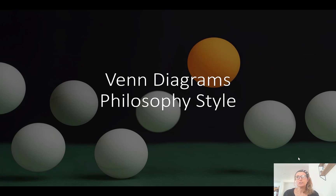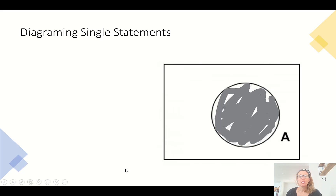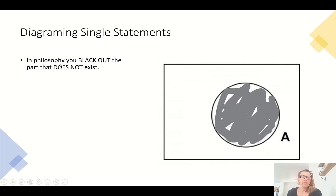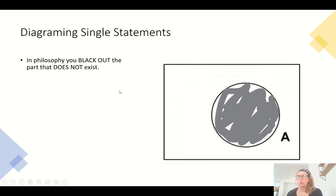But specifically in logic, Venn diagrams, there are certain rules for using them. And here's the most important thing to remember: in philosophy, you shade in — or think about blacking out — the part that does not exist. So instead of highlighting what you want to say does exist, it's the opposite. You're eliminating.